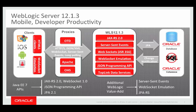With Oracle WebLogic Server 12.1.3 we've implemented support for a select set of Java EE7 APIs including JAX-RS 2.0, the Java API for JSON Processing, the Java API for WebSocket, and the Java Persistence API 2.1. We believe these specifications will enable the development of rich mobile-style applications. We've also delivered value-added capability like support for the Server-Sent Events programming model and a WebSocket emulation capability for environments where WebSocket support doesn't exist in network infrastructure or browsers.